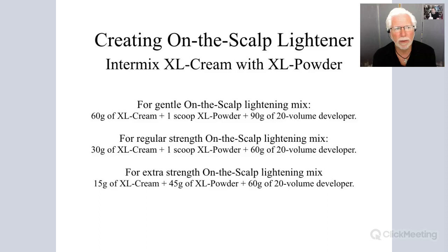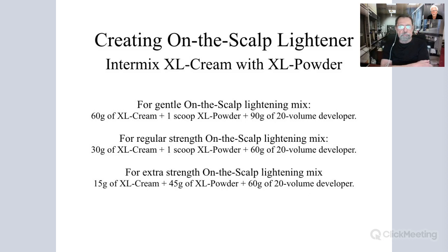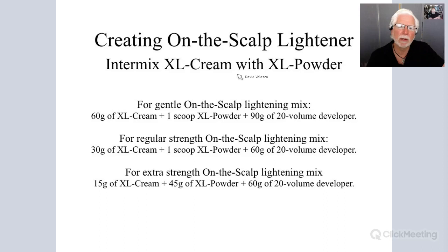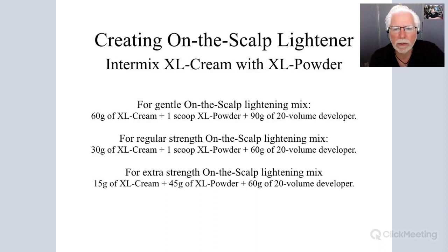Most manufacturers don't separate persulfate powder from cream lightener the way Chromastics does — Logics is one other that does it similarly. The important principle is the 20-volume rule. I tend to go lower rather than higher — for fine textured hair I'd use 10-volume, not 20. When highlighting with bleach in foils and applying color between foils, I drop down to 10-volume: it gives more working time and slower lightening action, leaving the hair in better condition with better control.